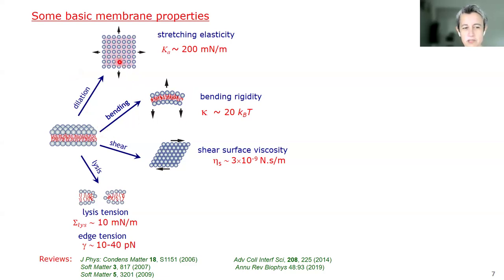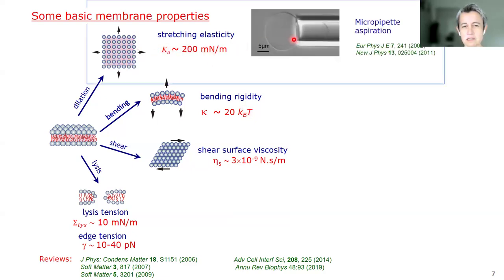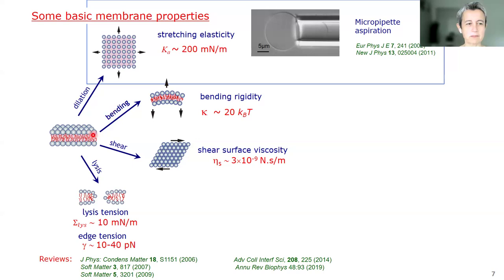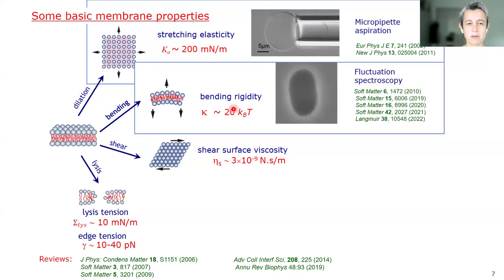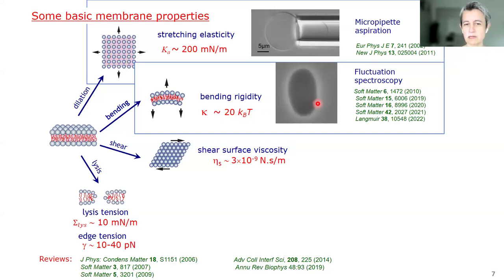You can use giant vesicles to measure membrane properties. You can measure stretching elasticity by aspirating giant vesicles in micropipettes, getting a number close to the stretching elasticity of a rubber sheet with the same thickness of five nanometers. The bending rigidity is measured in units of energy — 20 kBT is very small, which means that if several water molecules hit the membrane simultaneously it would exhibit thermal noise, as shown in this movie of the dancing vesicle.